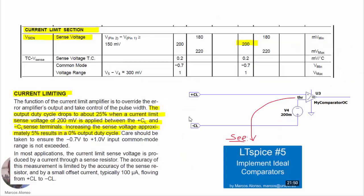For the current limit section, we take into account an internal sense voltage of 200 millivolts. We use a comparator with open-collector output, which we developed in the video 'LTSpice Number 5: Implement Ideal Comparators.' We add 200 millivolts in series with the inverting input to implement the comparison, because the protection activates whenever the voltage between the two current-limit inputs is higher than 200 millivolts.